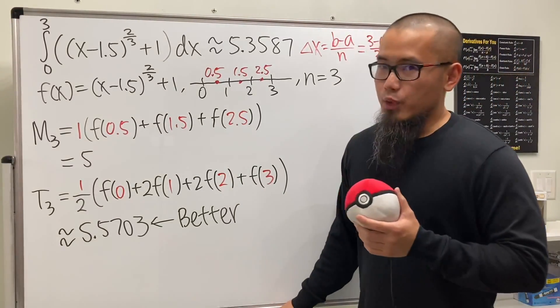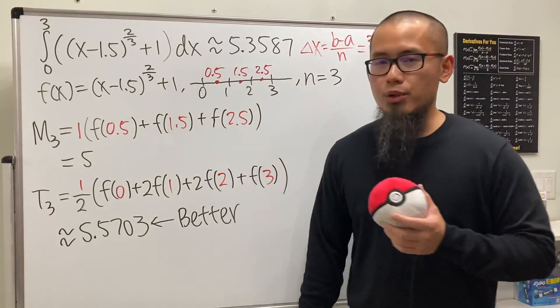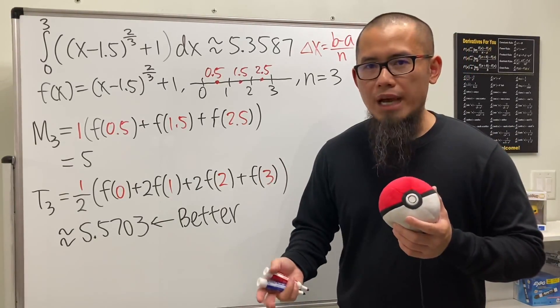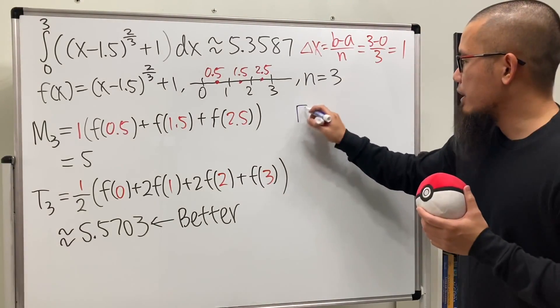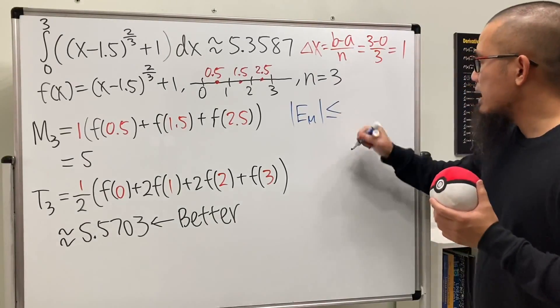The reason we've been talking about the midpoint rule being usually better than the trapezoidal rule is because we look at the error bound formula. Let me remind you guys on the side.